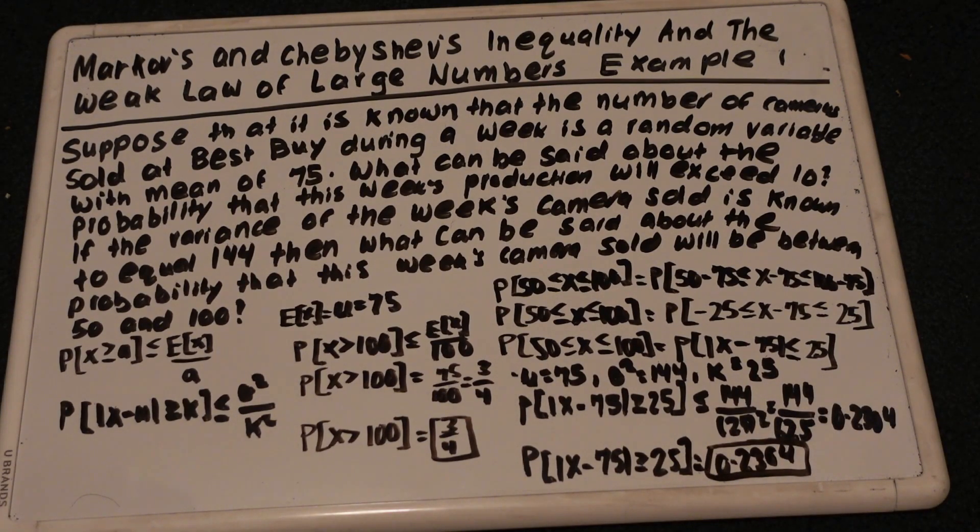So the probability that this week's cameras sold will be between 50 and 100 is 0.2304, or 23.04%.